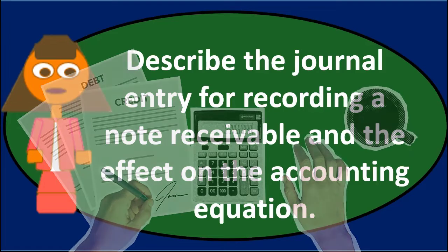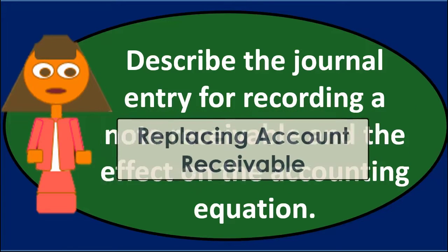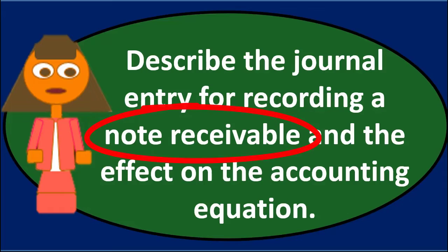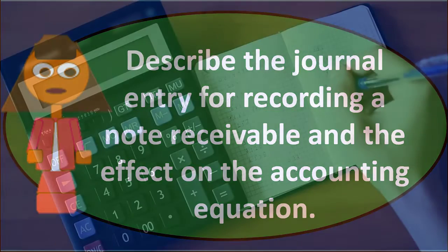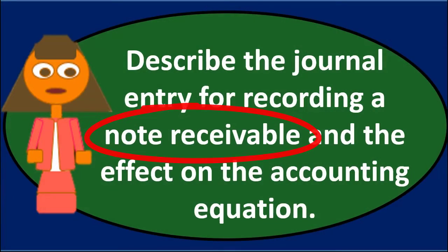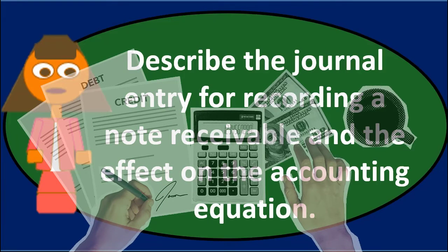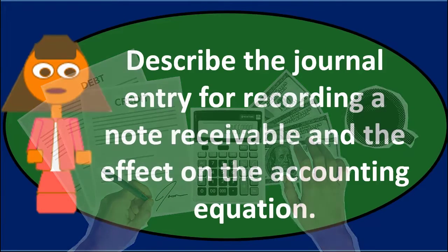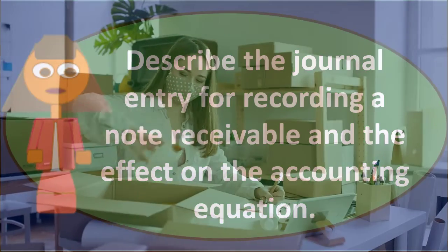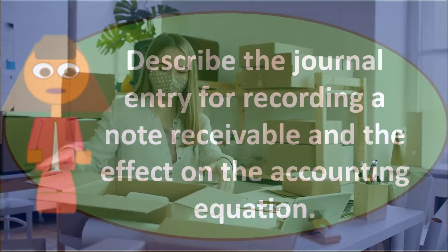For a note receivable, we may have the same type of transaction with the same journal entry, simply replacing accounts receivable with notes receivable. The journal entry could be a debit to notes receivable and a credit to sales, revenue, income, or fees earned — whatever we call the revenue account. If goods are sold, we'd also debit cost of goods sold and credit inventory.